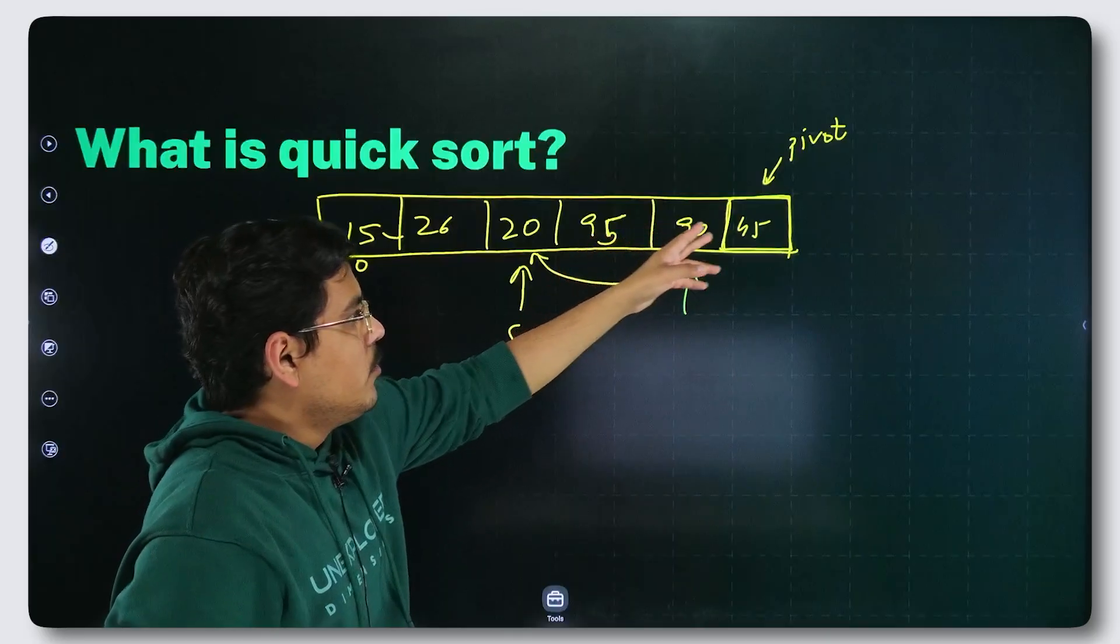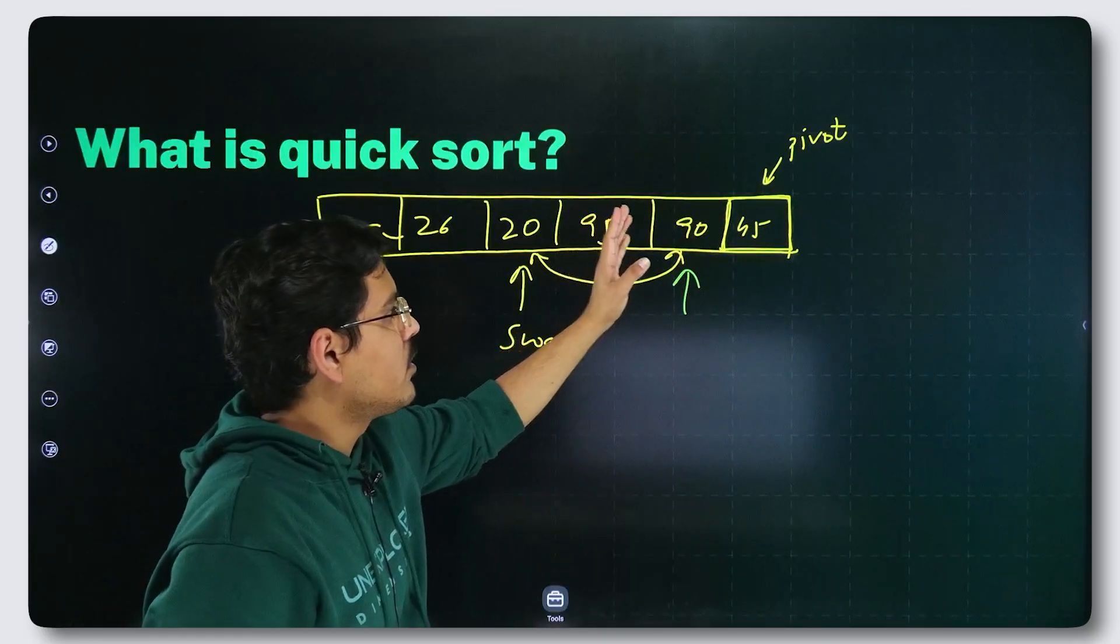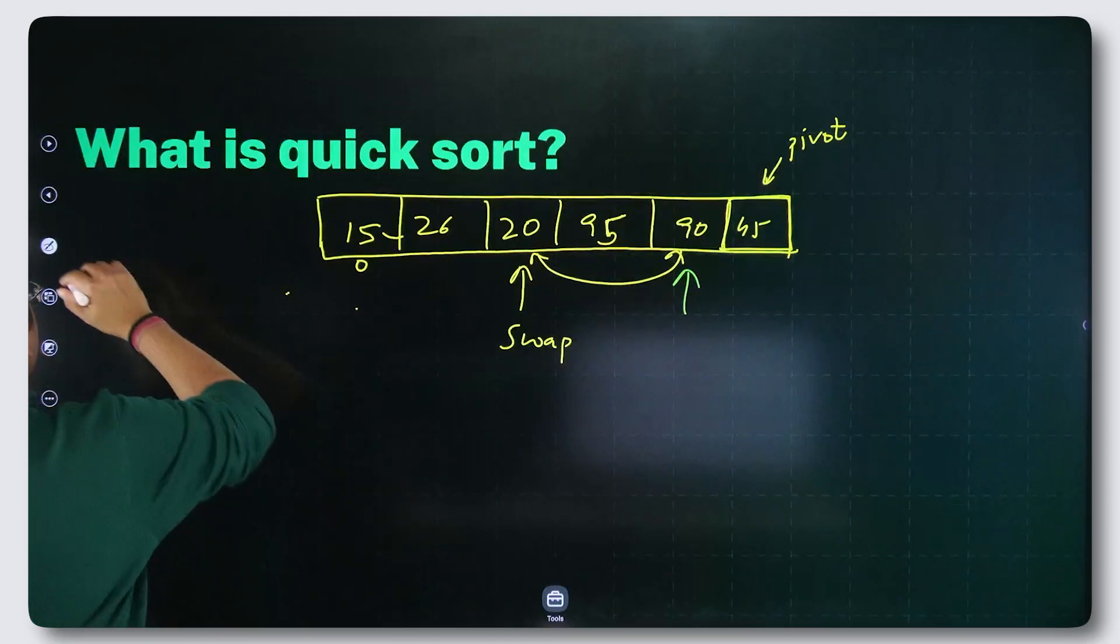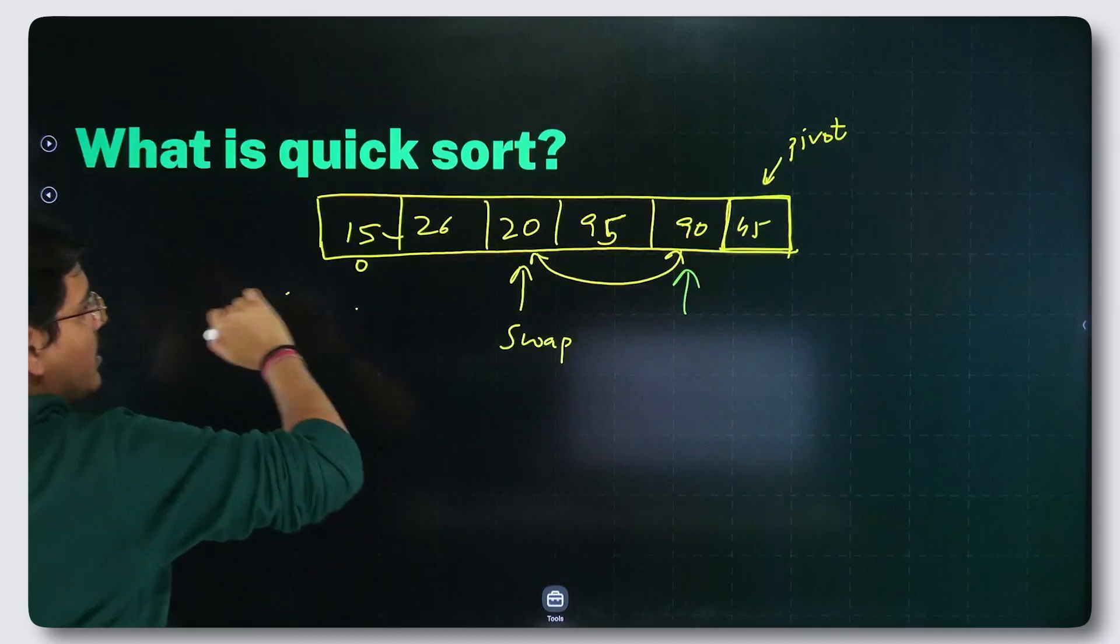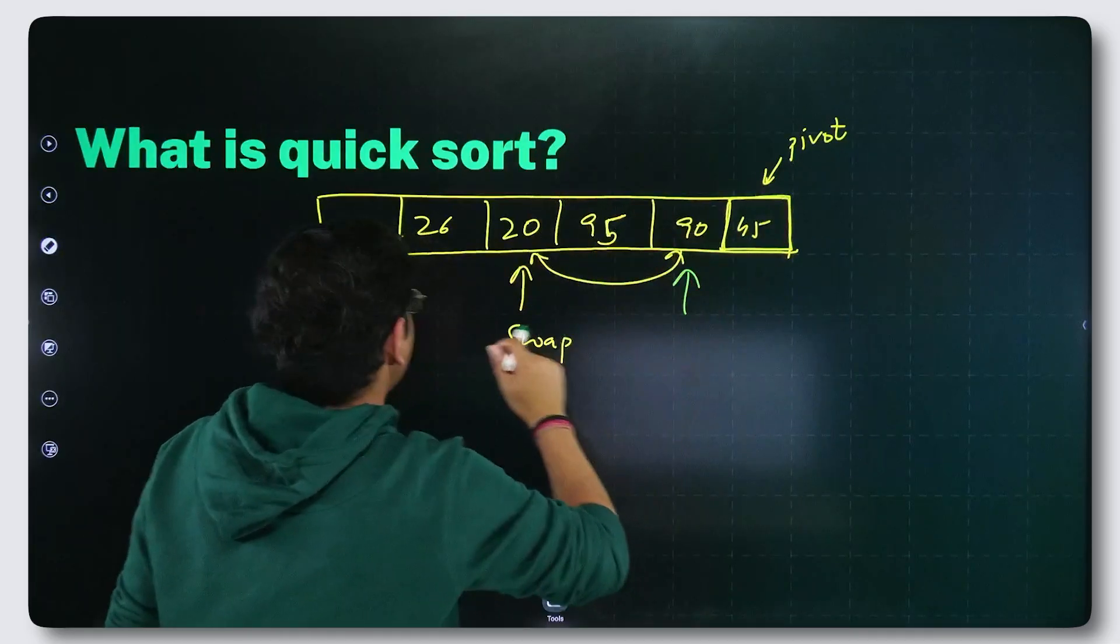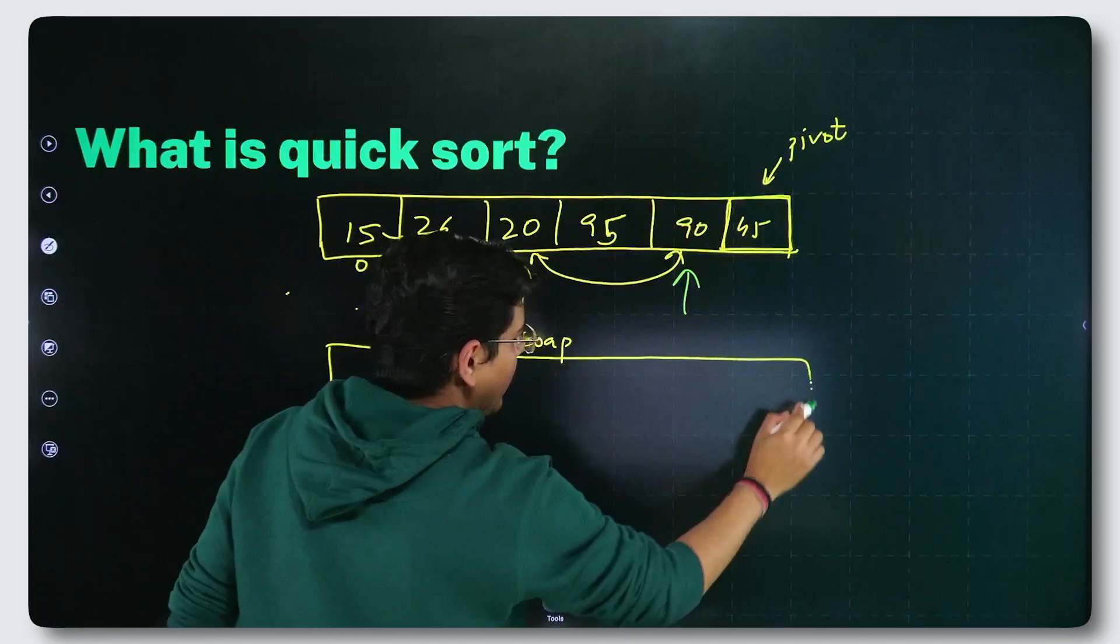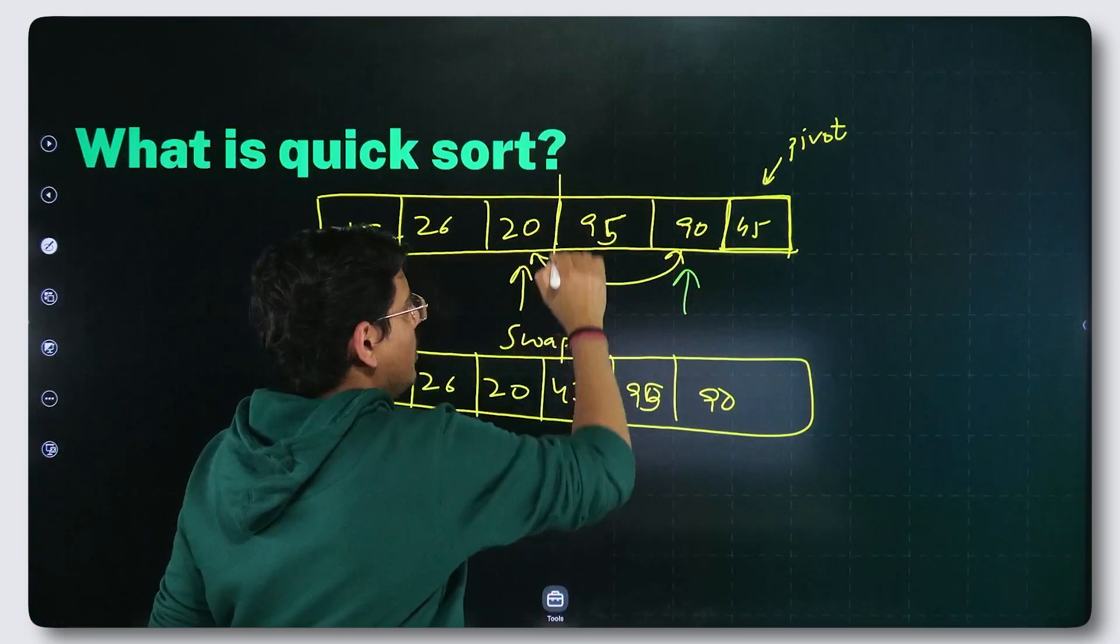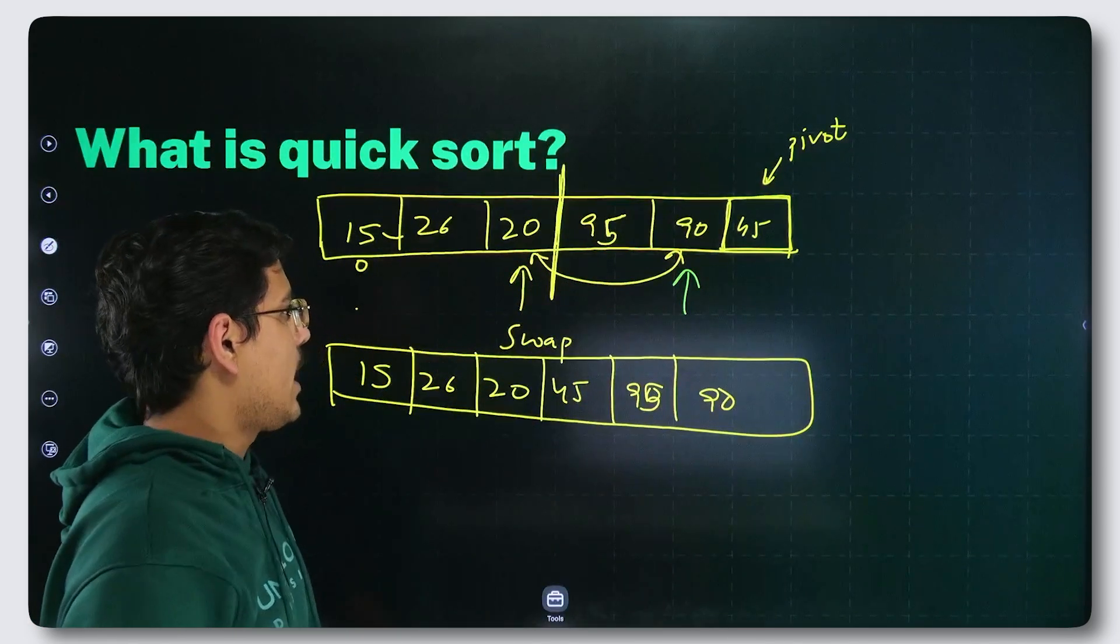And you put the pivot at its right place and you shift this whole array in this direction. What will happen? See. What you do is, I will erase this. You basically shift this swap in between and you shift the right hand portion on that side. What I am saying is, you create an array like, so basically, this was the partition. This is where partition should happen.